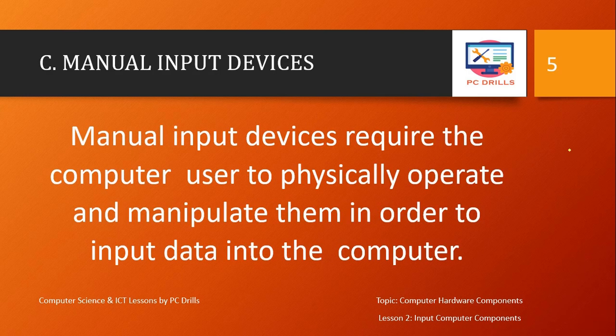Manual input devices require the computer user to physically operate and manipulate them in order to input data into the computer. For example, when typing a word document, you have to press each letter with your finger manually for the computer to translate that letter and display it on the screen. Manual input devices require your help — human operation or human intervention.